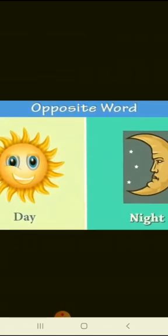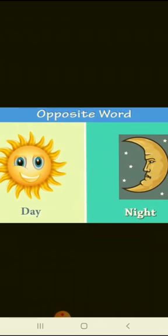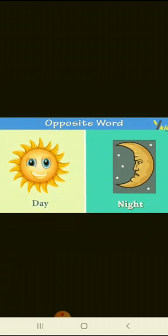First picture you can see on your screen: day and night. In the day picture you can see a picture of sun and children. In the night picture you can see a picture of moon. Opposite of day is night. Spelling of day is d-a-y, day. And spelling of night is n-i-g-h-t, night. You have to learn the spelling also.